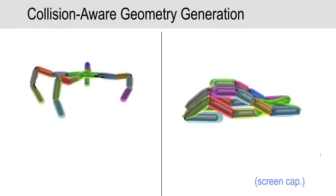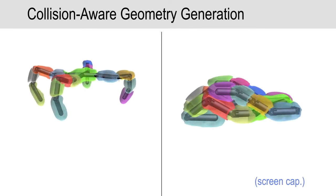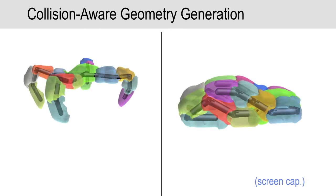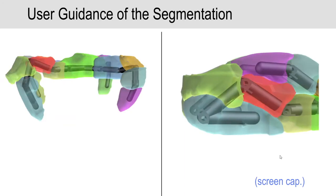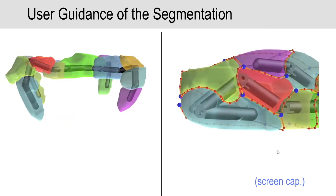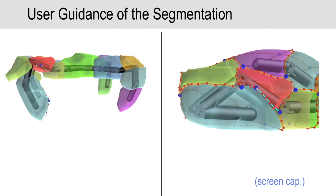The next stage of our design process is geometry generation, which creates skin meshes by segmenting the target object using a collision-aware, multiple-level set-based growth model. We also provide users with intuitive editing tools to direct the segmentation.